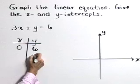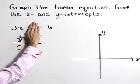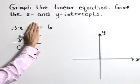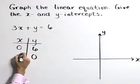If we let y equal 0, and our y term disappears, we have 3x is equal to 6, or x must be 2.